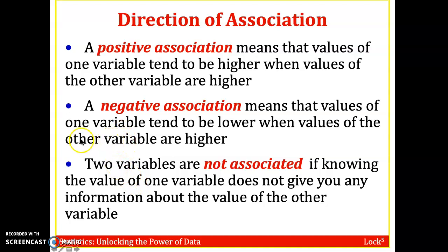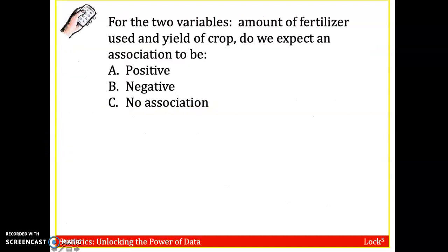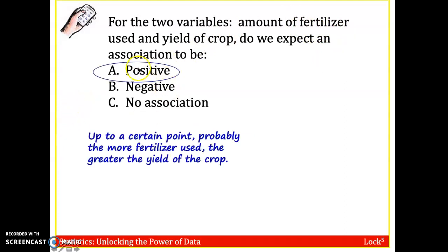Let's look at a couple of examples. For the two variables — amount of fertilizer used and the yield of the crop — do we expect the association to be positive, negative, or no association? We would hope, if this is a good fertilizer for the given crop, this should be positive correlation. Up to a certain point, having more fertilizer should yield a greater crop.